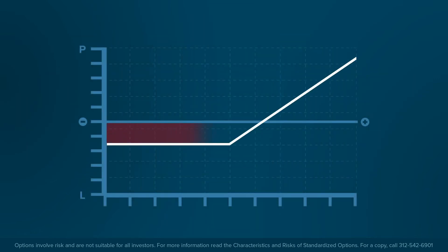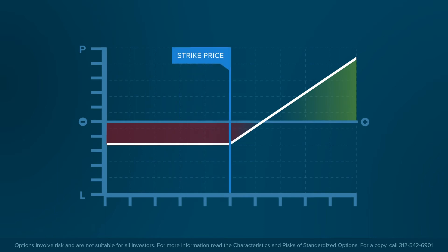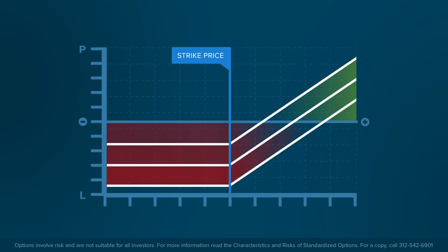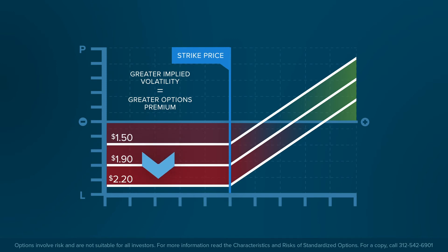Having already noted the importance of the relationship between underlying assets and strike price to an option's price, it would stand to reason that the outlook on future underlying asset price movements would affect the price of an option. The greater the forecasted price movement, or implied volatility, the greater the probability that an option will increase or decrease in value. Therefore, the greater the implied volatility, the greater the potential for the option's price to change.